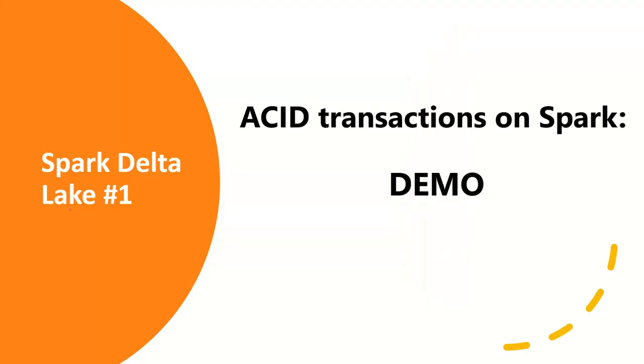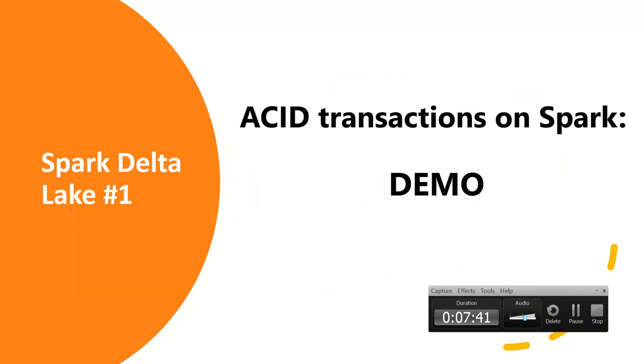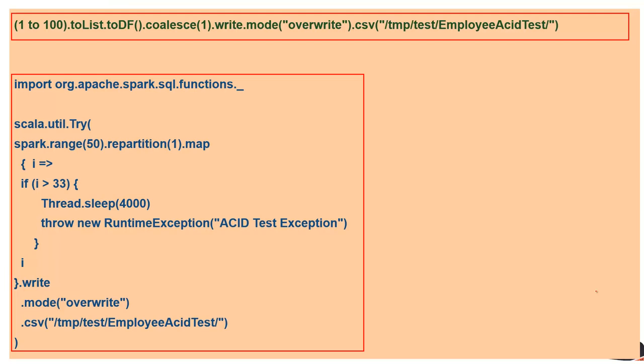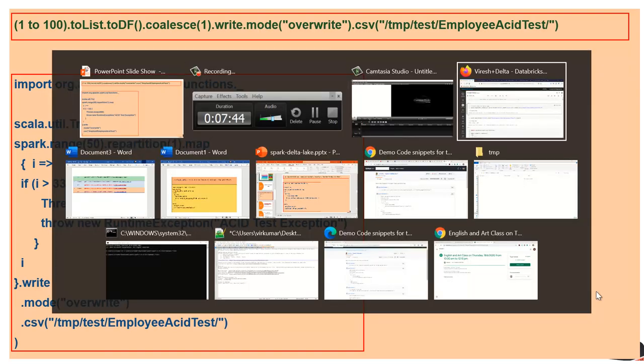Let's run a demo to see how Spark Delta Lake brings that ACID transaction flavor onto Spark. First, let's understand the shortcomings in existing Spark versions and why they are not ACID. As per the documentation, some level of atomicity is maintained, but as soon as there is any runtime exception, that breaks down. Let's run it with the existing Spark version on the Spark shell.